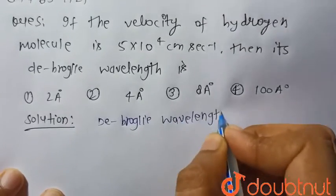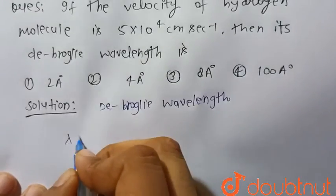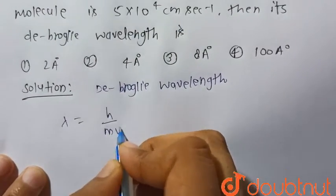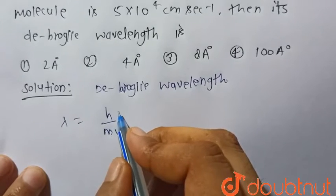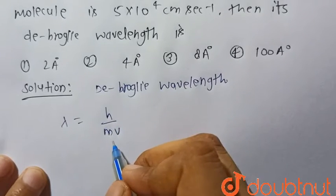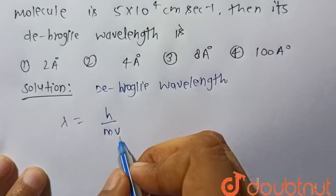So we know that de Broglie wavelength, that is lambda, is given by h upon mv, where h is the Planck constant, m is the mass of the particle or molecule, and v is the velocity of that molecule.